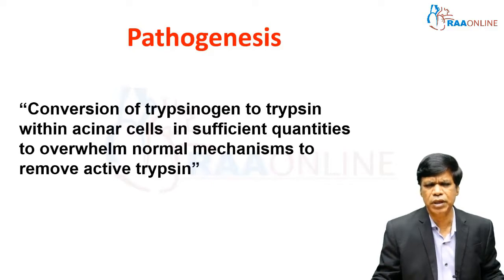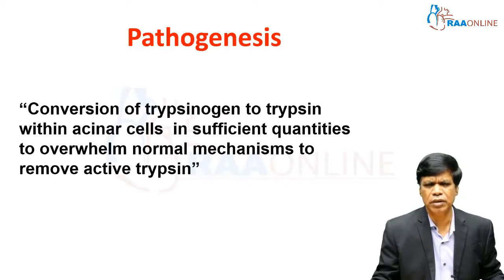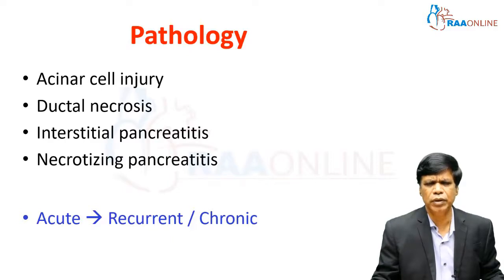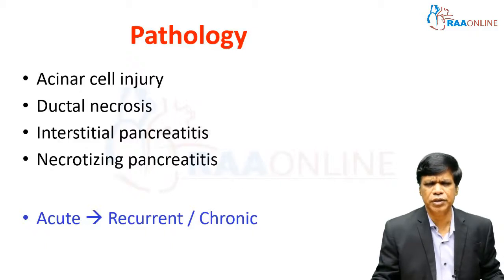The conversion is too fast and too massive, and the activated trypsin causes damage to the site of production — the pancreatic acini — and the site of conductance — the pancreatic ductal system. So it starts with acinar cell injury and proceeds with ductal necrosis.